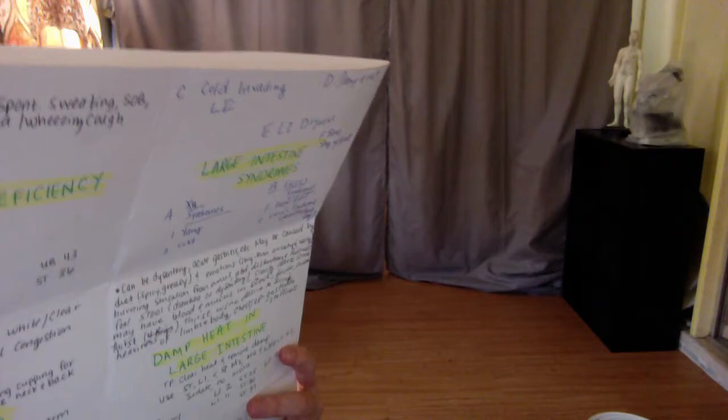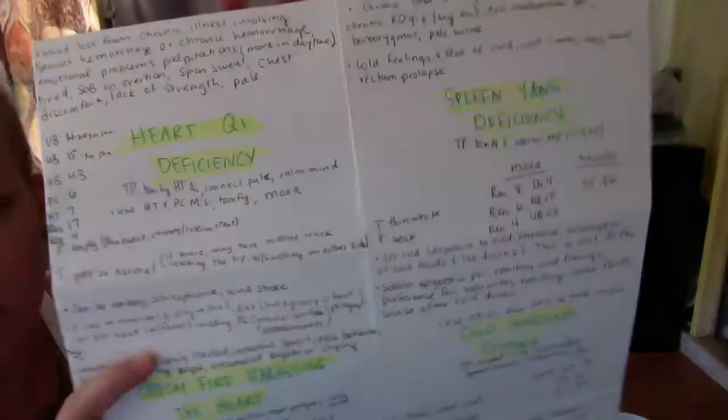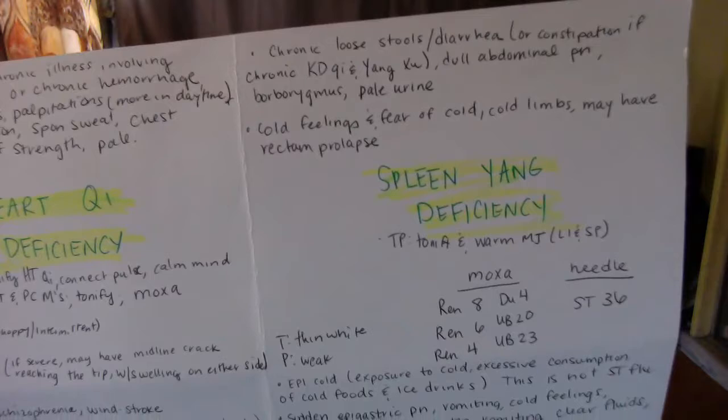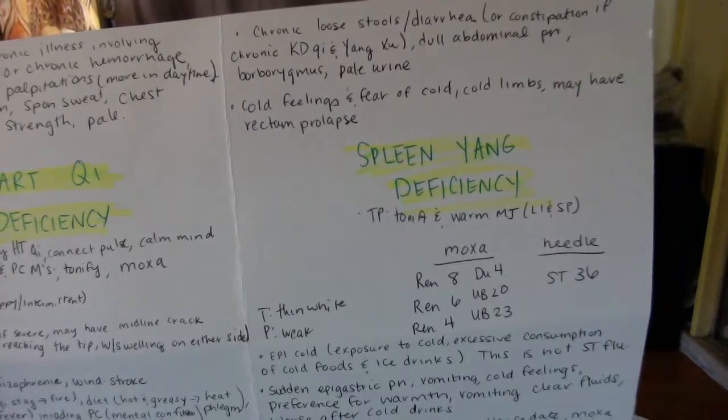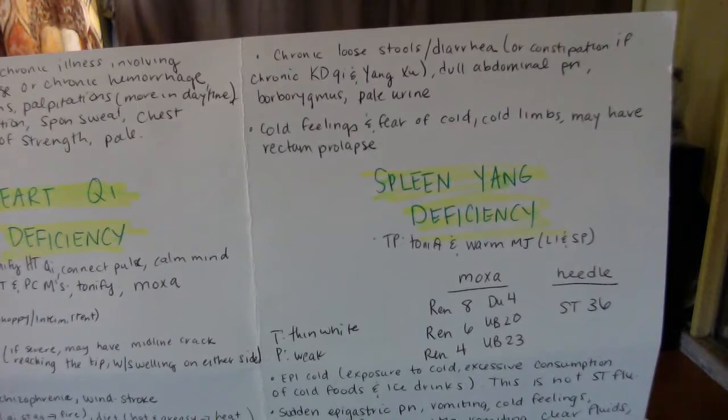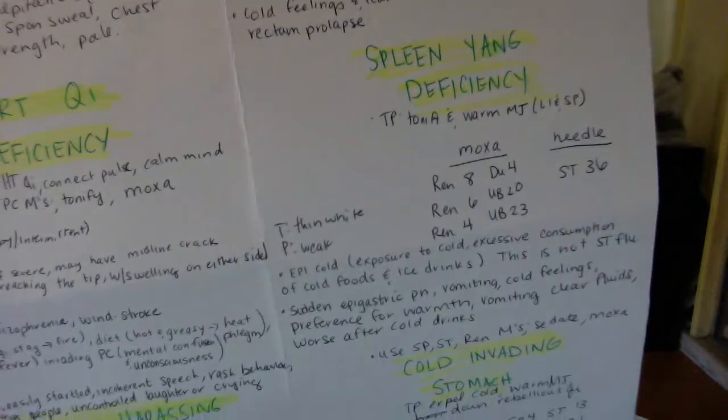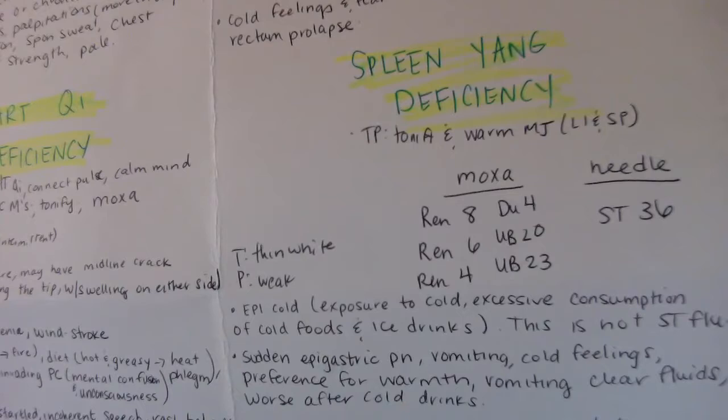I think we have two more to cover. Spleen yang deficiency: chronic loose stools or diarrhea, or constipation if chronic kidney chi and yang deficiency. Dull abdominal pain, borborygmus, pale urine. Cold feelings and fear of cold, cold limbs, may have rectum prolapse.